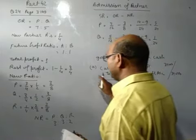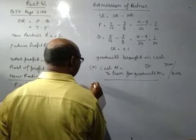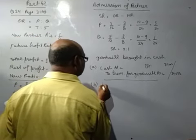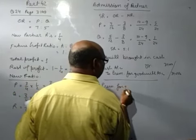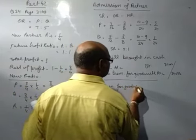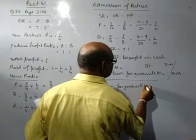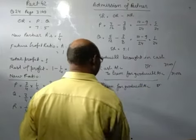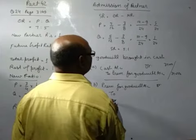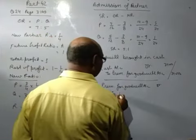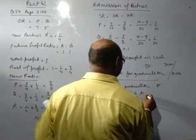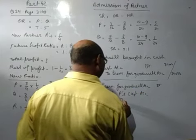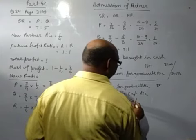And secondly, you will distribute the premium for goodwill between the partners. So premium for goodwill account debit to old partner capital. Old partners are P and Q, so P capital account and to Q capital account.